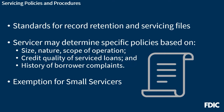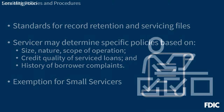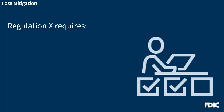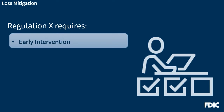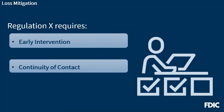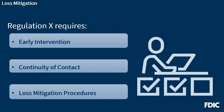Small servicers are not exempt from the error resolution and information request requirements in Regulation X. Regulation X contains early intervention, continuity of contact, and loss mitigation requirements that apply only to large servicers. The early intervention rule requires large servicers to try to contact borrowers within specified timeframes after delinquency. Large servicers are also required to maintain continuity of contact with delinquent borrowers. In addition, large servicers must take specific procedural steps to help borrowers who submit loss mitigation applications to retain their homes through loan modification or other options.